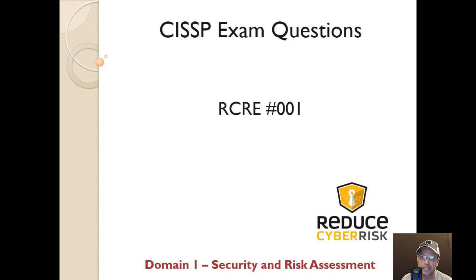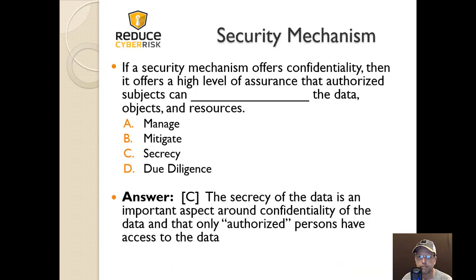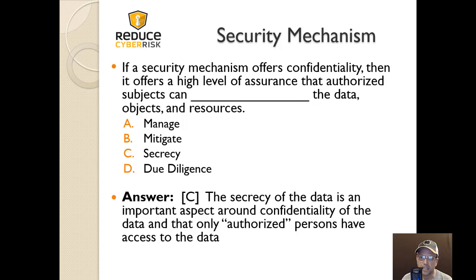Alright, this is CISSP exam questions 001, over Domain 1: Security and Risk Assessment. The question is: if a security mechanism offers confidentiality, then it offers high-level assurance that authorized subjects can blank the data objects and resources. Is it: A) manage, B) mitigate, C) secrecy, or D) due diligence? The answer is C — secrecy.